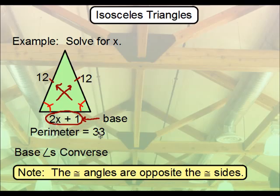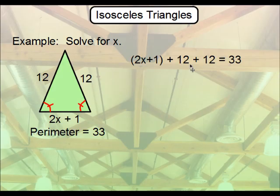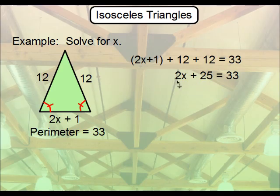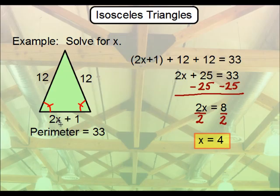Since our focus is on all the sides, we need the perimeter to set up the problem. In the last example, we totaled all angles and set equal to 180 degrees. Here, X is not part of an angle, so instead we total everything and set it equal to the perimeter. That gives us: 2X plus 1 plus 12 plus 12 equals 33. Collect like terms, then subtract 25 from both sides, and then divide by 2. If asked for the length of that side, plug in 4 to get 2 times 4 plus 1, which is 9.